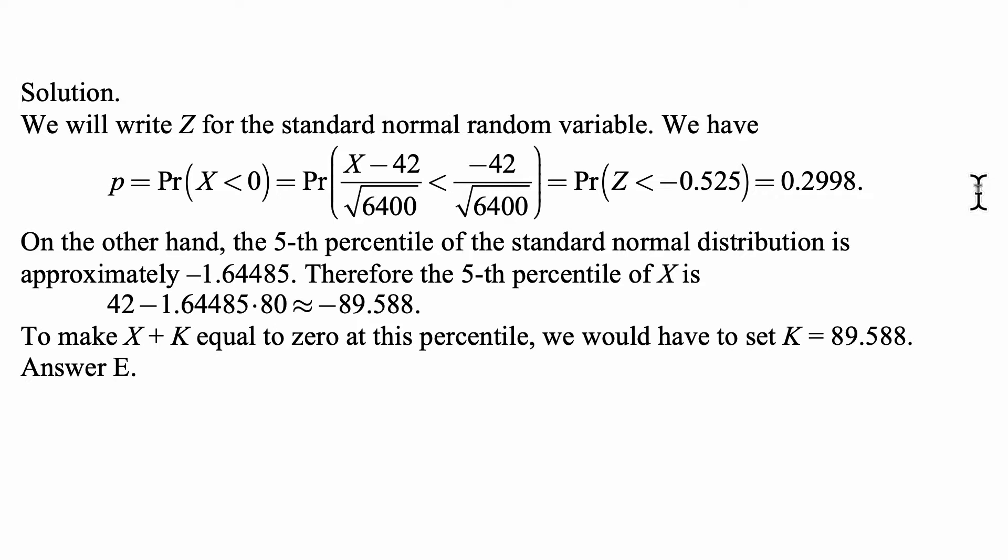This is also equal to the probability that standard normal Z is greater than 0.525, if you don't have a table with negative values, or 1 minus the probability that Z is less than 0.525. And we find this to be 0.2998.